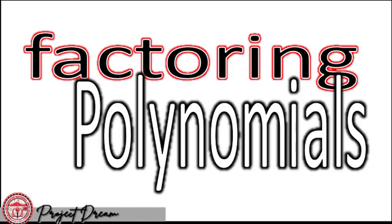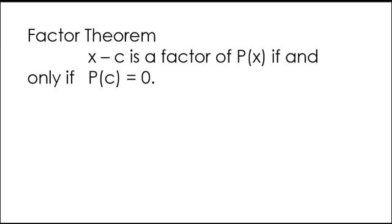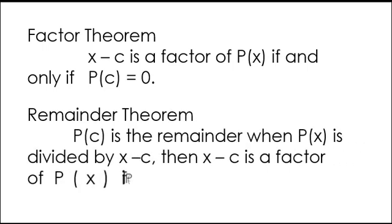Factoring a polynomial is expressing the polynomial as a product of two or more factors. Recall the Factor Theorem: x minus c is a factor of p of x if and only if p of c is equal to zero. The Remainder Theorem states that p of c is the remainder when p of x is divided by x minus c, then x minus c is a factor of p of x if p of c is equal to zero.